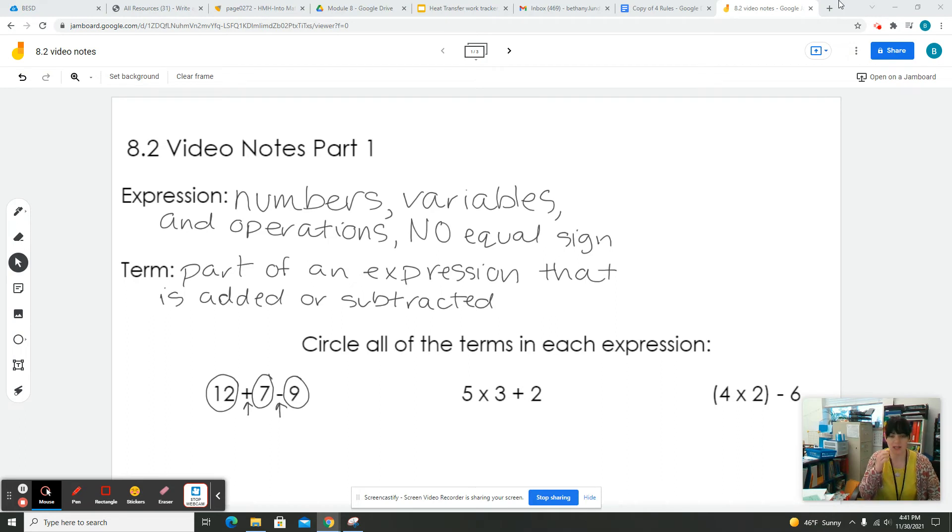For the second one, we have 5 times 3 plus 2. And so we have an addition sign right here. And so that means that that separates two terms. But this multiplication sign actually does not separate the 5 and the 3 because terms are only separated by an addition sign or a subtraction sign. And so these two numbers are actually part of the same term because they aren't being added or subtracted. So in this expression, we have two terms. Even though we have three numbers, we still only have two terms.